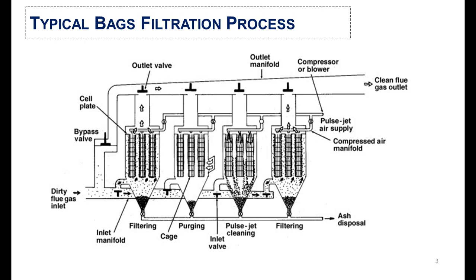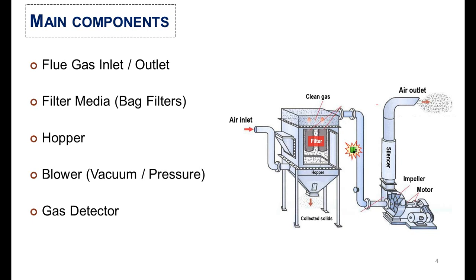The dust is collected in the bottom hopper, where it is further discharged into the recycling unit. The main components of bag filter units are the flue gas inlet, access points, filter media (bag filters), receiving and discharge hopper, blower for creation of vacuum or pressure, and the gas detector.